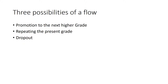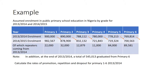In this regard, we're going to focus on how you can calculate the promotion, repetition, and dropout rate. So let's look at this example. Assume enrollment in public primary school education in Nigeria by grade for 2013-2014 and 2014-2015. We'll have figures given by grade from primary 1 to primary 6, with enrollment data for both periods.